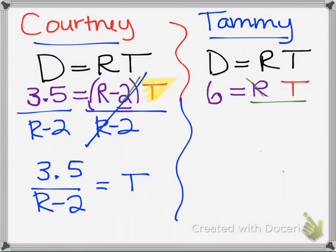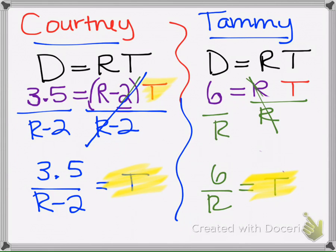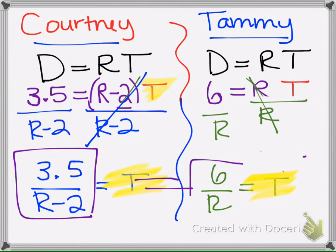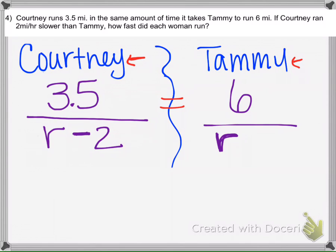Now over here, if we divide by R, we have 6 over R equals T. So because they both equal time, when you take the distance divided by the rate equals the time it takes, that's why we could just take this and set it equal to this. That's why this works right here.